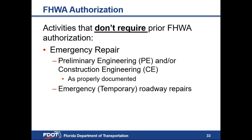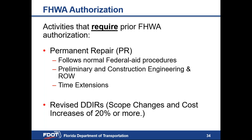Activities that do not require prior FHWA authorization are your emergency repairs, including preliminary engineering, construction engineering, and emergency or temporary roadway repairs to restore essential traffic. Activities that do require prior FHWA authorization are your permanent repairs, which follow normal Federal-aid procedures, and include preliminary and CEI, right-of-way, and time extensions. A revised DDIR will be required for a scope change or a cost increase of 20% or more.